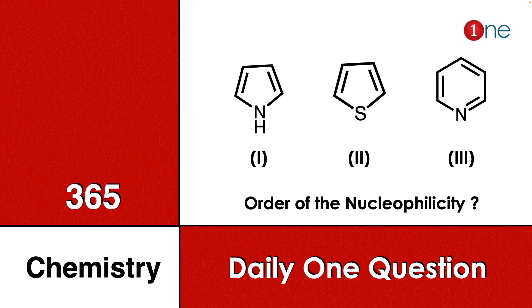Welcome to One Chemistry. This is the 365 Chemistry series — one daily question for you. Three different compounds are given: the first one is pyrrole, the second one is thiophene, and the third one is pyridine. You have to arrange these three compounds in order of nucleophilicity.